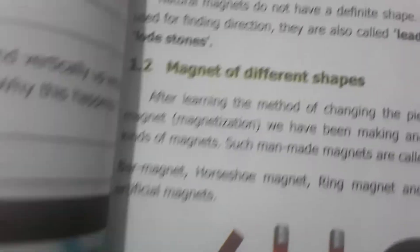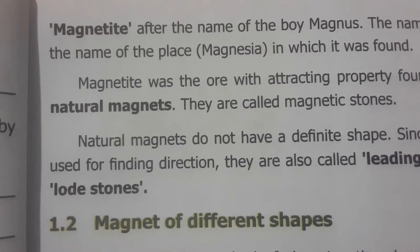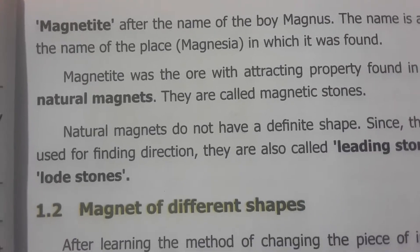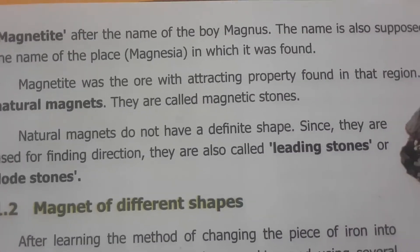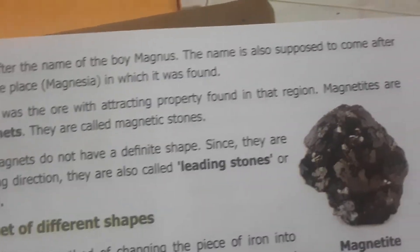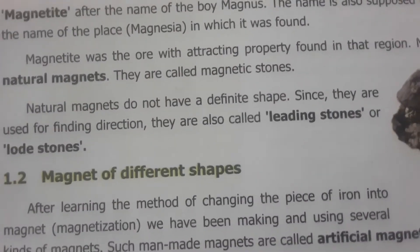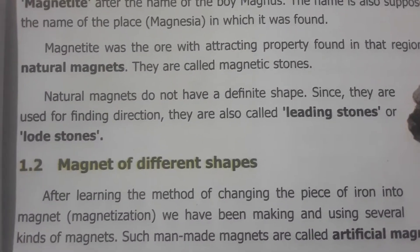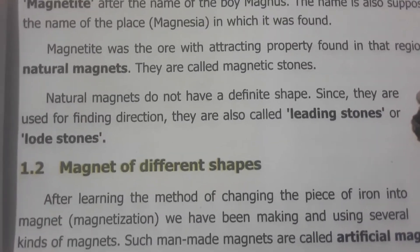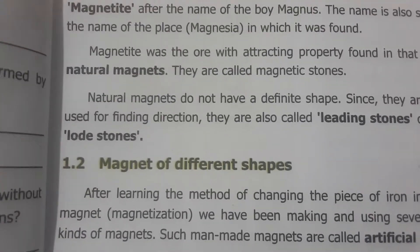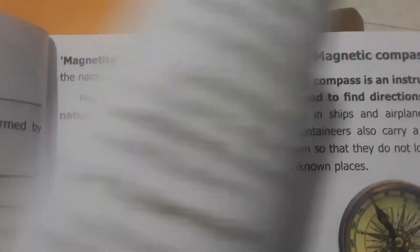Magnets are of two types: natural magnets and artificial magnets. The magnetite was the ore with attracting property found in that region. Natural magnets are called magnetic stones or lodestones. In olden days, the Chinese used lodestones as magnets for detecting the directions of south and north during sea travel.